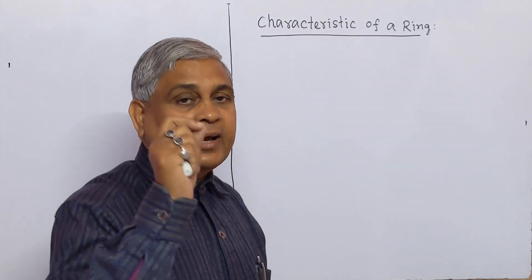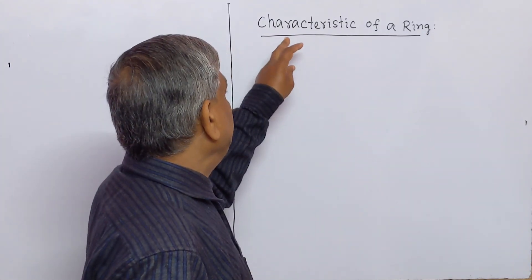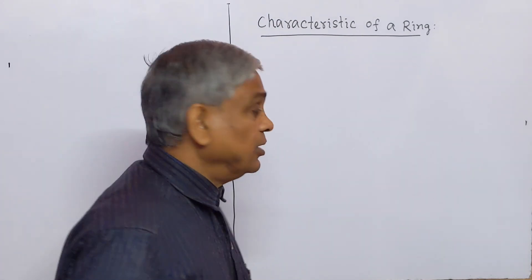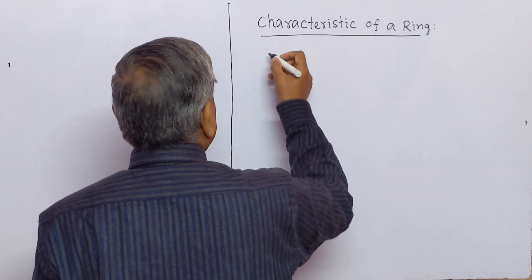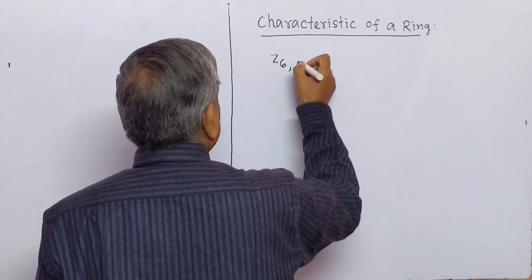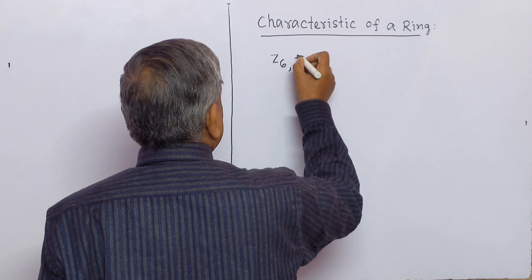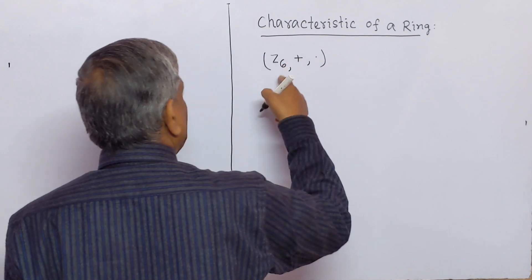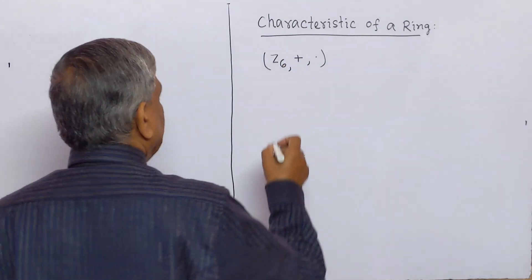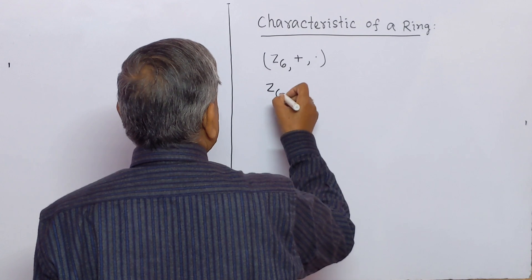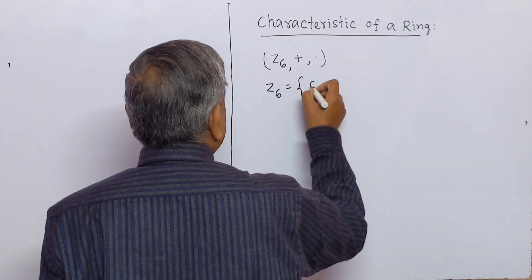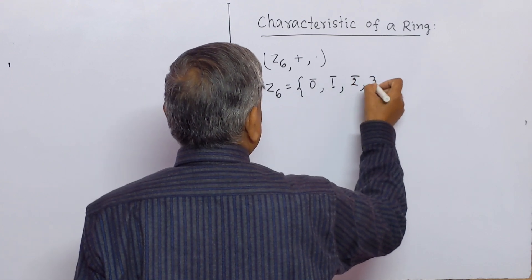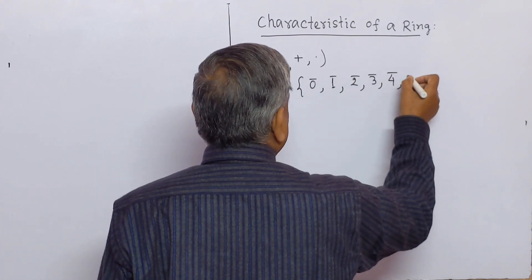Now we will try to understand the characteristic of a ring by a particular example. Let we have Z6 with binary operations addition and multiplication. We know that this is a ring. Z6 contains elements 0-bar, 1-bar, 2-bar, 3-bar, 4-bar, 5-bar.